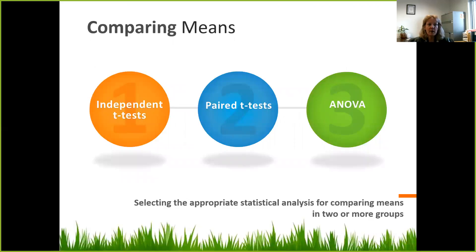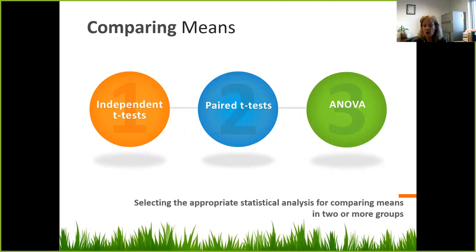When talking about comparing means, a few tests we might use are the independent t-test, paired t-test, and ANOVA. These three common ones will be covered now as we discuss selecting the appropriate statistical analysis approach for comparing means in two or more groups.